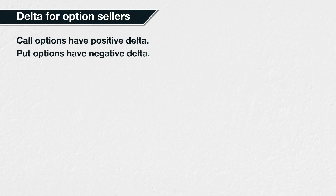Call options have positive delta — if the underlying price increases, all other things being equal, the value of call options will also increase. Put options have negative delta — if the underlying price increases, all other things being equal, the value of put options will decrease. So being long a put option has a negative delta. This is not the only way to get a negative delta with options, because the seller of a call option also has a negative delta.